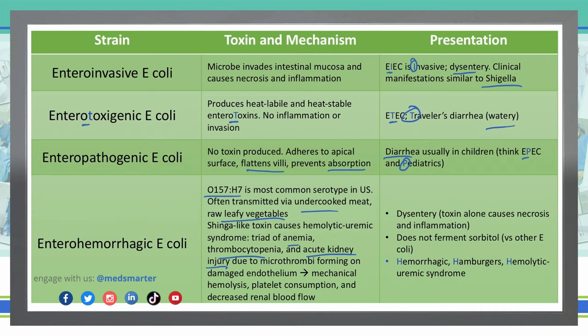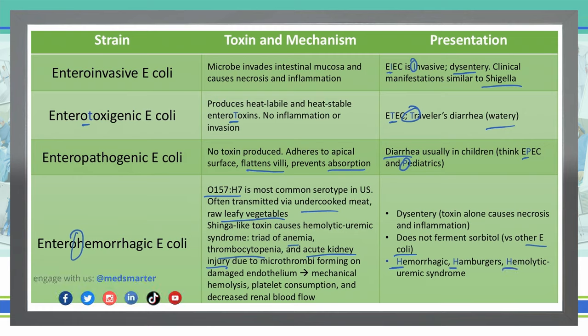All of that is due to the microthrombi that form around the damaged endothelium, giving us mechanical hemolysis, platelet consumption, and decreased renal blood flow. EHEC causes dysentery — the toxin alone causes necrosis and inflammation. It does not ferment sorbitol, whereas all other E. coli do. Remember the 'H' in EHEC for hemorrhagic hamburgers, since it's passed in undercooked meat, and for hemolytic uremic syndrome with its triad of anemia, thrombocytopenia, and acute kidney injury.